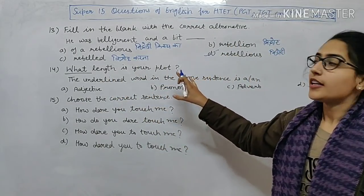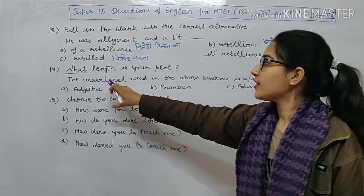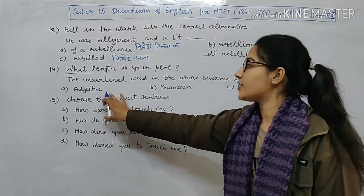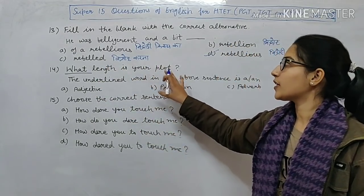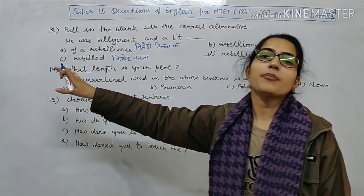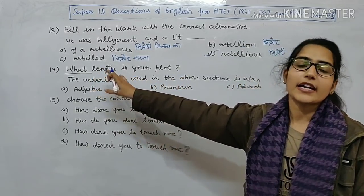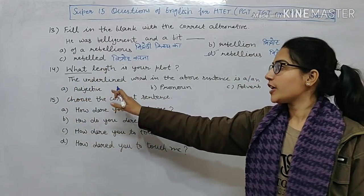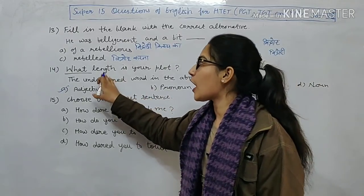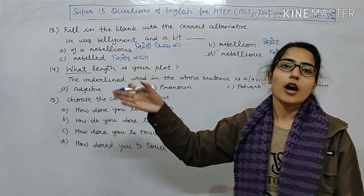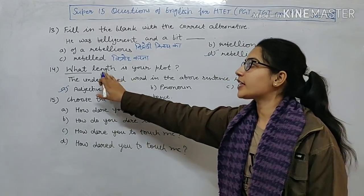Next: 'What length is your plot?' — identify the part of speech of the underlined word 'what'. Options: A — adjective, B — pronoun, C — adverb, D — noun. Here 'what' is used before the noun 'length' to ask a question about it. When a question word modifies a noun, it is called an interrogative adjective. So 'what' here is an interrogative adjective — option A is correct.